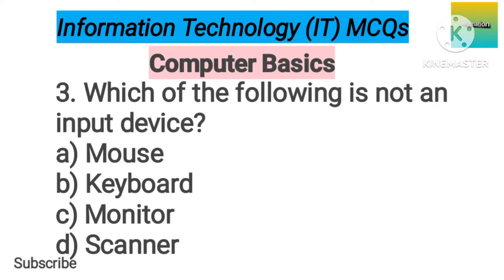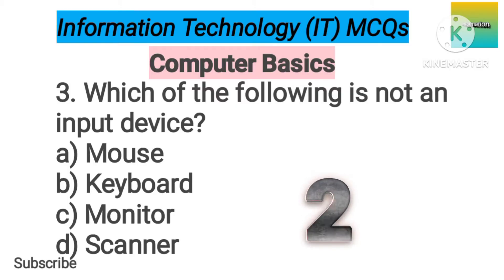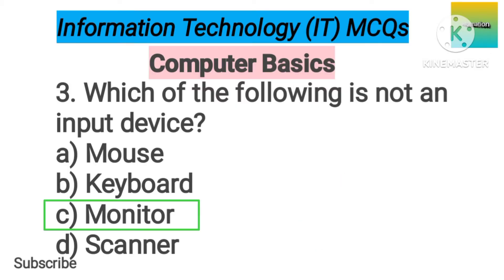Number 3. Which of the following is not an input device? Option A: Mouse. B: Keyboard. C: Monitor. D: Scanner. The correct answer is option C, Monitor.